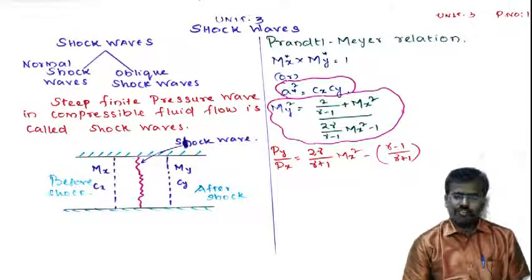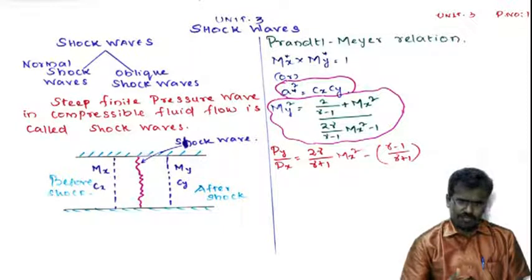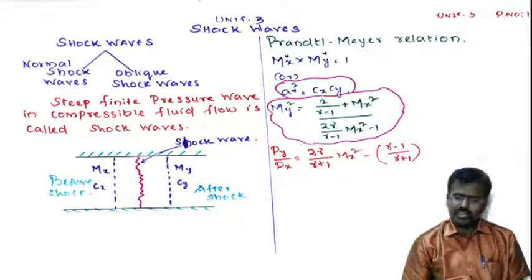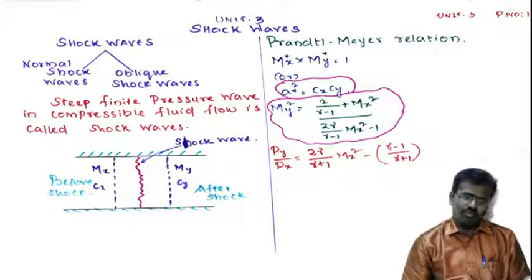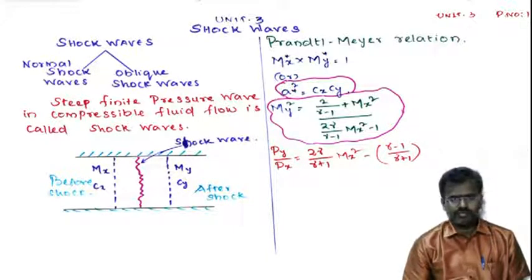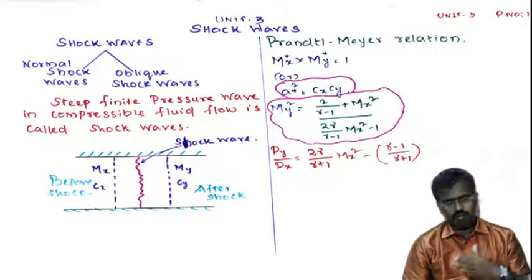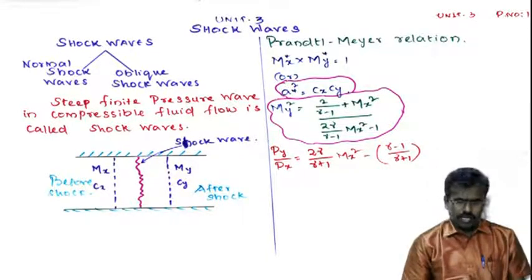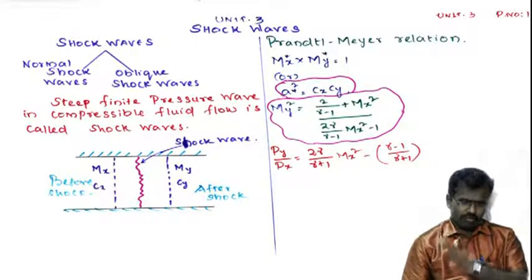Your third unit is shockwaves. Shockwaves means what is a sudden steep rise of the pressure wave — a steep finite pressure wave in a compressible fluid flow is called a shockwave. The shockwave is classified basically into two types: normal shockwaves and oblique shockwaves, as shown in the drawing in the background.